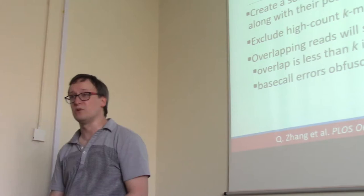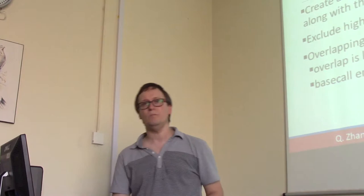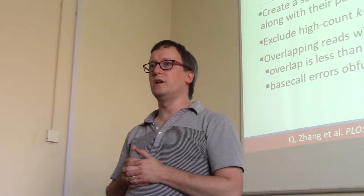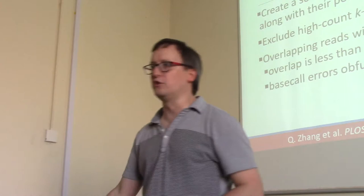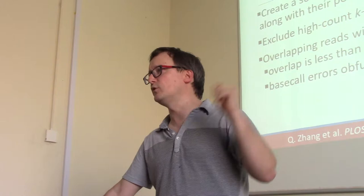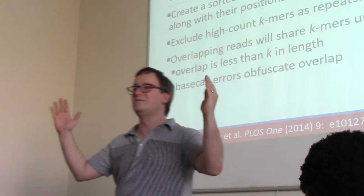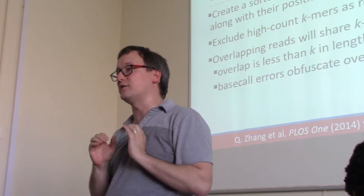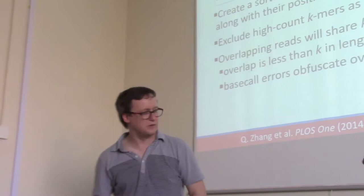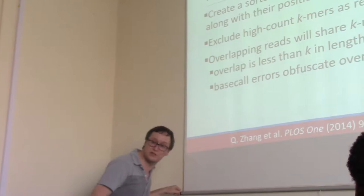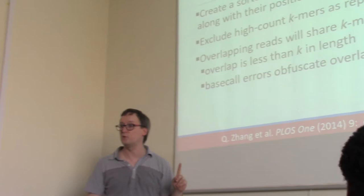Now we're going to move into some of the more advanced algorithms used for assembly — largely for name recognition, so that when you see these terms in a seminar you won't be lost. K-mers are one of these concepts that show up all over the place in sequencing literature. Imagine we have a 100 base pair read from our sequencer, and we're interested in K-mers of 25 nucleotides. We'll dissect that up into every set of 25 consecutive letters we can. Here's residue number one and residue number 100.